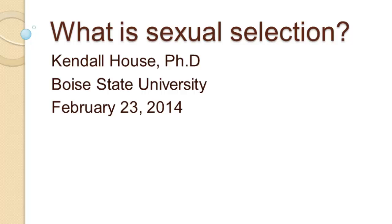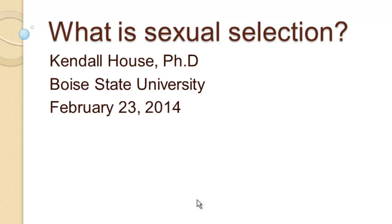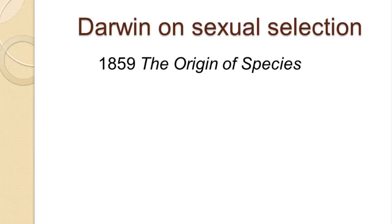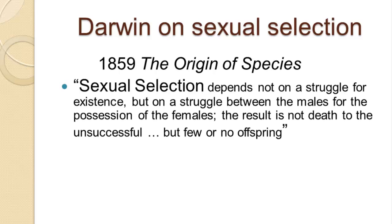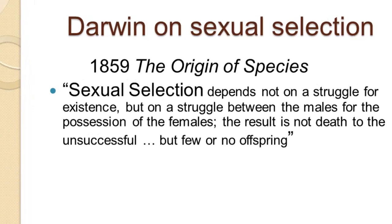This presentation is called 'What is Sexual Selection?' Darwin coined the term sexual selection in 1859 in the Origin of Species, where he defined it as a kind of selection that depended not on the struggle for survival — the struggle for existence — but rather on a struggle between the males for possession of the females.